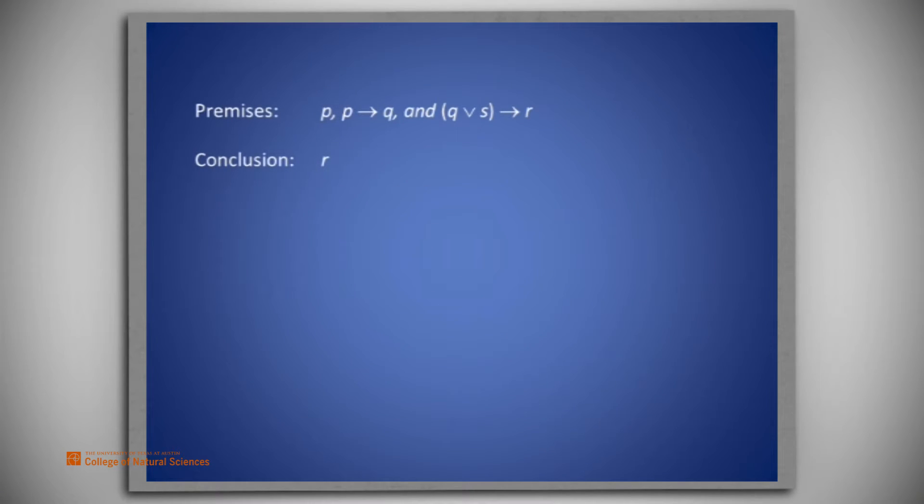The proof will be using the symbols P, Q, S, and R. The premises that we have in this case are P, P implies Q, and Q or S imply R. The conclusion we seek is R.